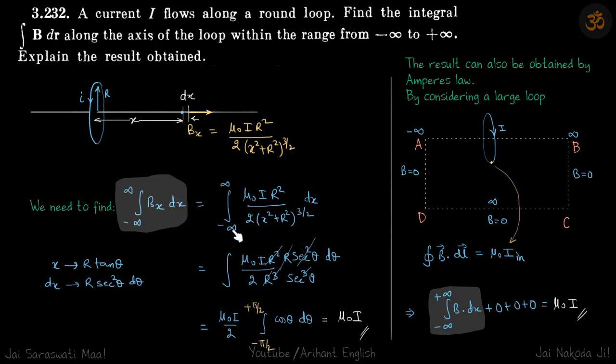Now when x is minus infinity, theta is minus pi by 2, and when x is plus infinity, theta is plus pi by 2. So limits will be minus pi by 2 to plus pi by 2.